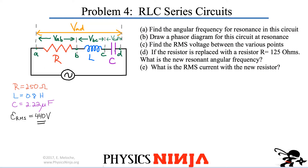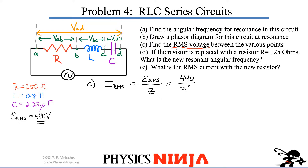Let's move on to RMS voltages. They ask for RMS voltages between various points — keep in mind this is RMS, not peak. First, let's calculate the RMS current, which is given by Ohm's law: RMS voltage divided by total impedance. At resonance, impedance equals resistance, so it's 440 divided by 250 ohms, giving an RMS current of 1.76 amps.